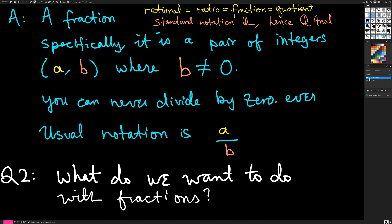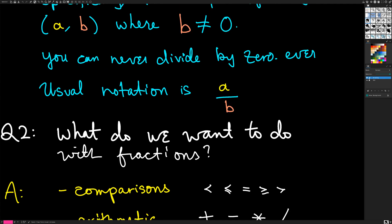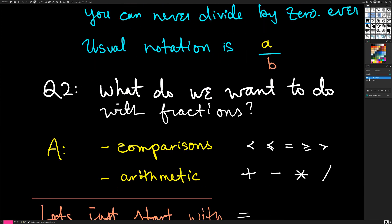The usual notation for fractions: you take the first number, put it on top, the second on bottom, and put a horizontal line between them — you say A over B, or A divided by B. A and B are integers. Our opacity layer — wherever you talk about something logically — has to start somewhere, and for me the bottom is integer arithmetic. I assume basic things about integer arithmetic are correct and don't ask further questions, because there has to be a level at which you stop asking questions. So what do we want to do with fractions? There are basically two types of things: comparisons and arithmetic.